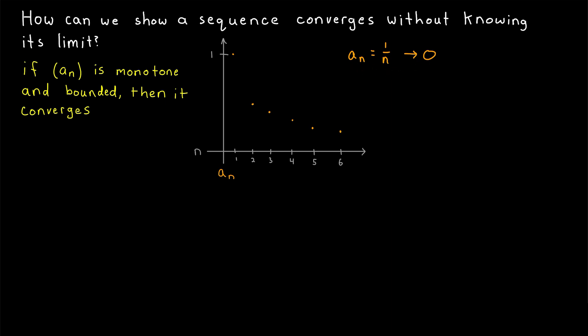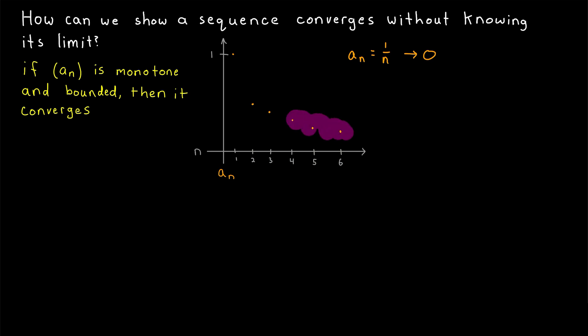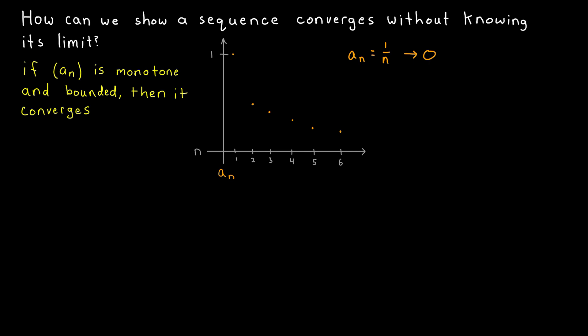Then we may wonder, is there some other relation that's a vital part of sequences converging, but that has nothing to do with the limit? Well, if it doesn't have anything to do with the relation between the terms of the sequence and the limit, it seems the only other possibility would be some sort of relation between the terms of the sequence and themselves.